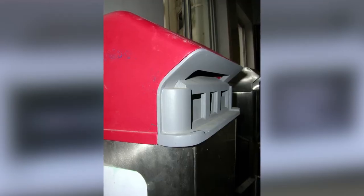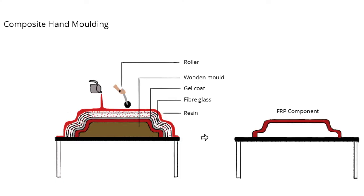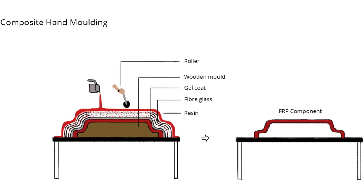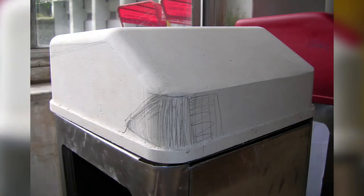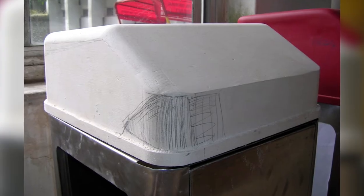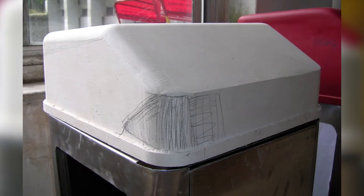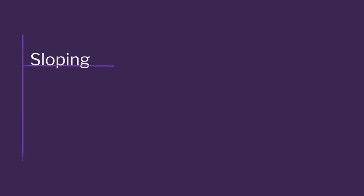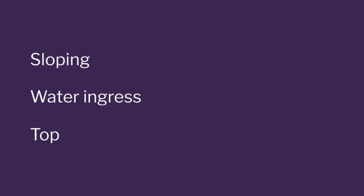How did we redesign? We studied where the problems are, then we said we will use this special composite hand molding process. Composites are very interesting — you work with resin and glass fiber. We went back to the conceptual stage, made a plaster mock-up, then studied whatever openings we should have. While doing all this, we were very focused on our process: the slope should be there, water ingress should not be there, the top should be integral.